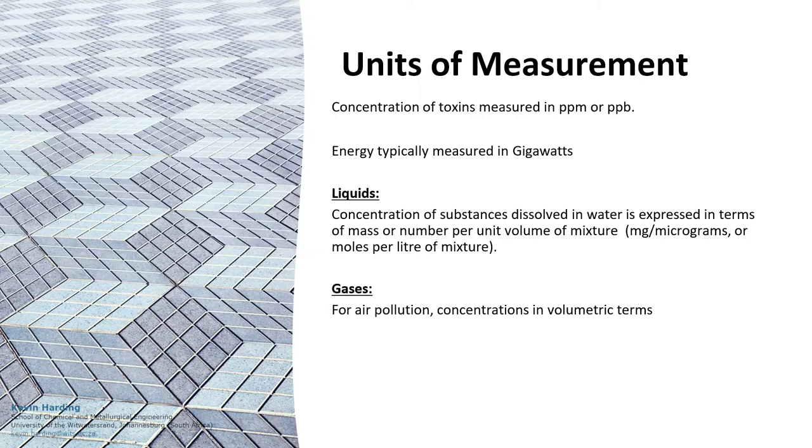Environmental engineering units can be measured in very small numbers, for example parts per million or parts per billion, or in very large units such as gigawatts. Liquids are expressed in terms of mass while gases are given in volumetric terms. Often you will be given non-metric values, and it is important to be able to convert any of these units from one to another.